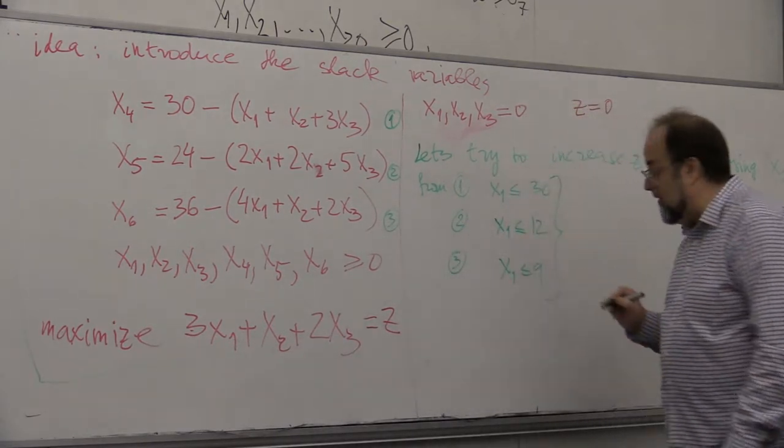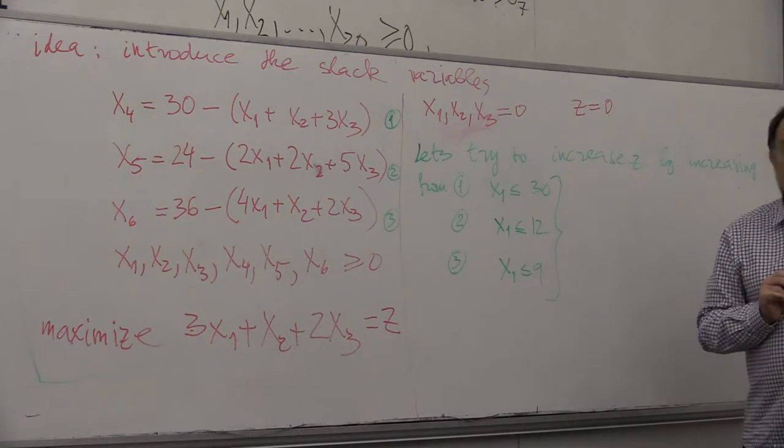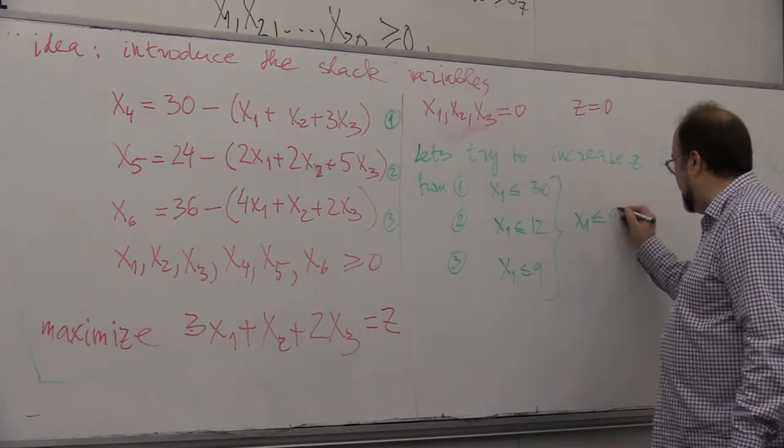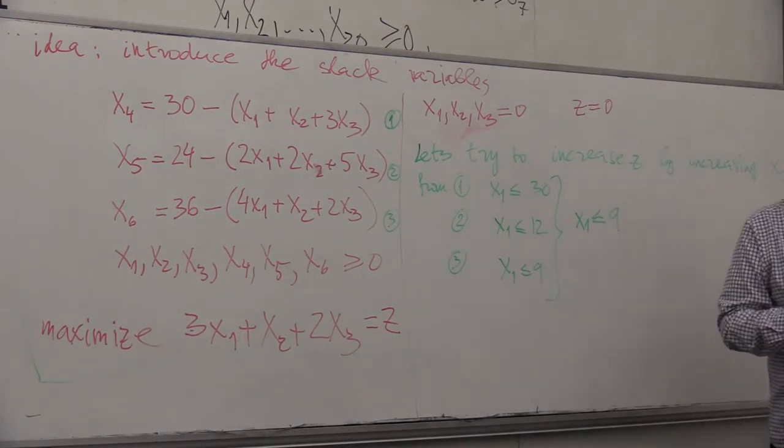Because all of these have to be satisfied, we conclude that x1 should be smaller or equal than 9. And now we act in a greedy way.